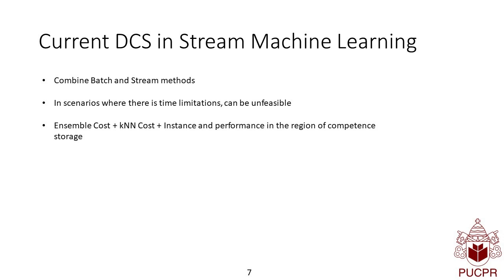Considering, for example, k-NORA eliminate in streaming, you will have the ensemble cost, you have the k-nearest neighbors cost to seek all the k-nearest neighbors, and also you must store the instances and the performance of the learners in the region of competence.